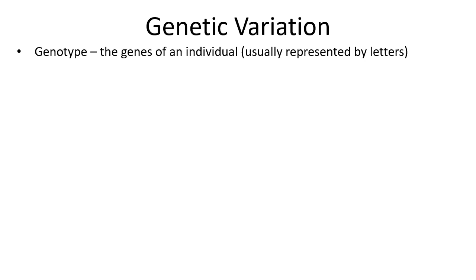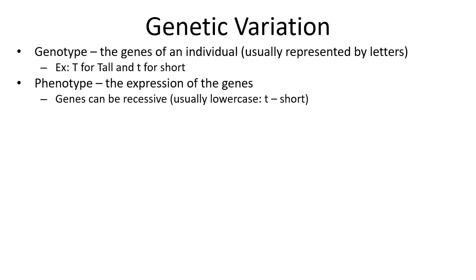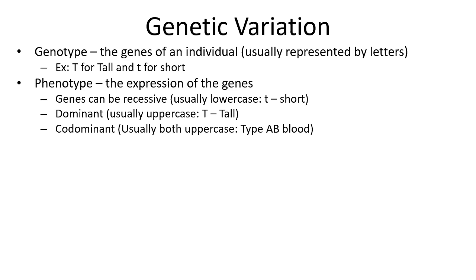Genetic variation is important to understanding evolution. Genotype is the genes of an individual, represented by letters. Phenotype is the physical expression of those genes. Genes can be recessive, represented by a lowercase letter, dominant represented by an uppercase letter, or co-dominant where both alleles are expressed. Some genes are plastic, meaning they aren't necessarily fixed in their expression.